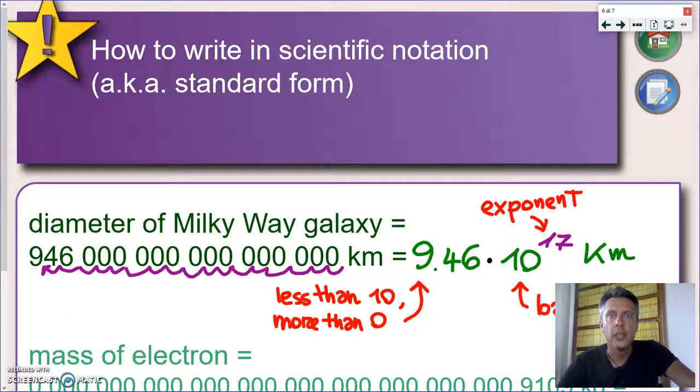Okay, now we're ready to transform, and especially I would really like to use the two numbers we saw at the beginning of this video, the diameter of the Milky Way galaxy and the mass of the electron. So we're going to see how to transform them into scientific notation. So as you can see, I rewrote here the size, the diameter of the Milky Way galaxy in kilometers.